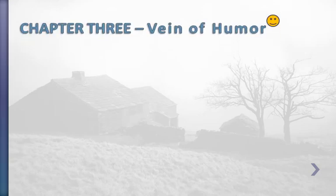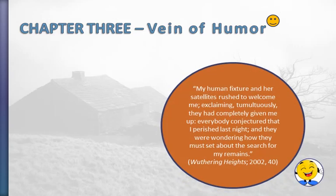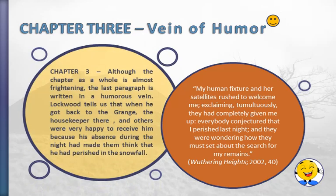Chapter 3 also includes inner humor in spite of the frightening atmosphere of the whole chapter. At the end of the chapter, Lockwood says: 'My human fixture and her satellites rushed to welcome me, exclaiming, to my chestling. They had completely given me up. Everybody conjectured that I perished last night, and they were wondering how they must set about the search for my remains.' So although the chapter as a whole is almost frightening, the last paragraph is written in a humorous tone. Lockwood tells us that when he got back to the Grange, the housekeeper and others were very happy to receive him, because his absence during the night had made them think he had perished in the snowfall.